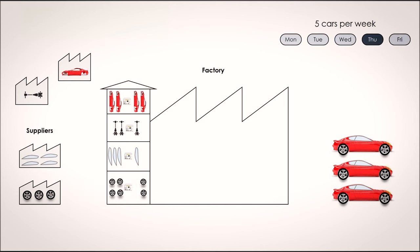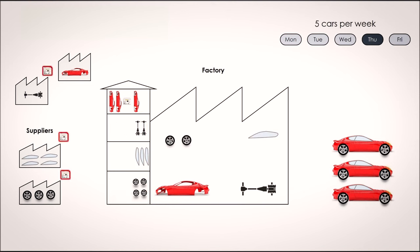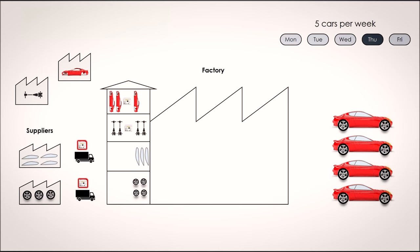On Thursday we finally get our wheels, start our production and notice three Kanban cards. We inform our suppliers who send us their parts and our fourth car is finished.